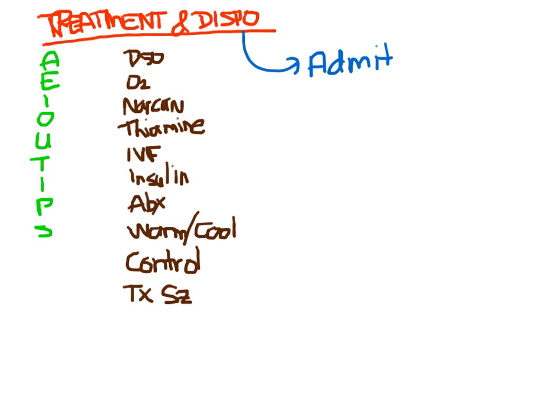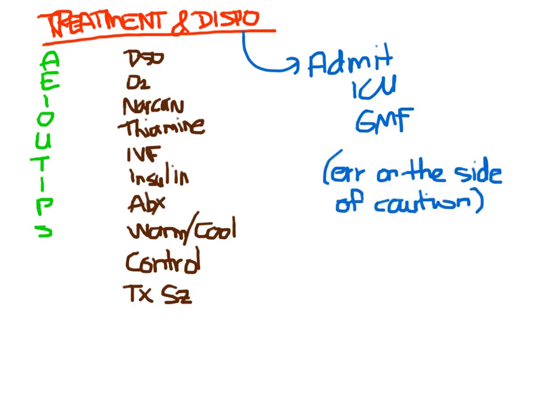Pretty much everyone else is going to stay — the question is where: the floor or the ICU? Ask yourself: how sick are they, is the cause easily reversible, did we figure out and fix it, is the patient back to normal, and how likely is this to recur? For example, if they took a bunch of oral hypoglycemics, they'll keep becoming hypoglycemic as the medications persist. If they need close watching, put them in the ICU. If you just want to keep an eye on them, the general medical floor may be fine. Err on the side of caution — these are tricky patients.